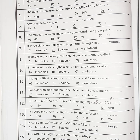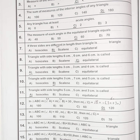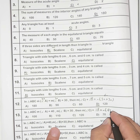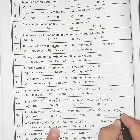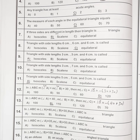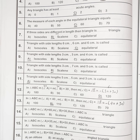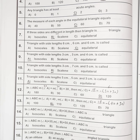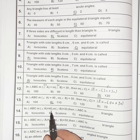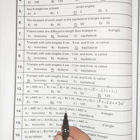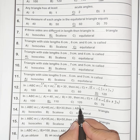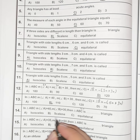Number thirteen: in triangle ABC, the measure of angle A equals 40 degrees and the measure of angle B equals 30 degrees. The measure of angle C equals 180 minus (40 plus 30) = 110 degrees. Since the three angles are all different, the triangle is a scalene triangle.